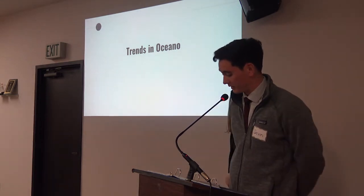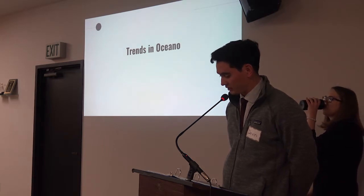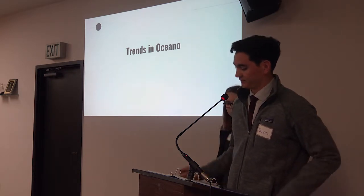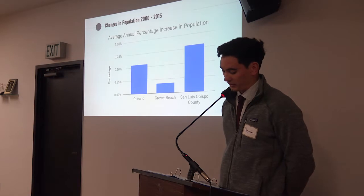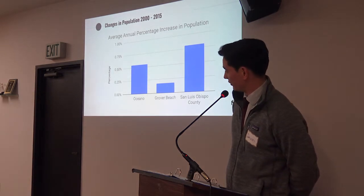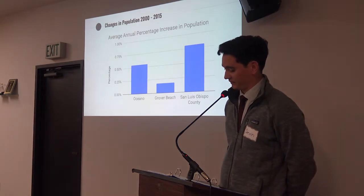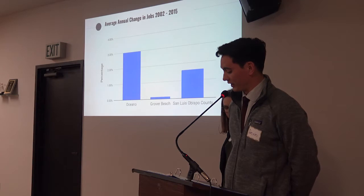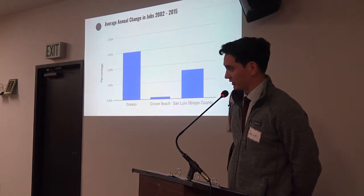We will now transition into today's content, beginning with an overview of demographic trends in Oceano compared to trends in the nearby region. These trends reflect changes in population and number of jobs available in Oceano and neighboring communities. This graph shows the average annual percentage increase in Oceano, Grover Beach, and San Luis Obispo County from 2000 to 2015. Oceano has been growing twice as fast as some of its neighbors, but not nearly as fast as the county. Historically, the average annual change in jobs reflects a similar story: between 2002 and 2015, Oceano grew faster than some of its neighbors and faster than the county at large.